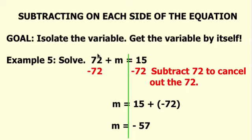We must cancel this positive 72. The only way to do that is to subtract 72 on both sides of the equation.